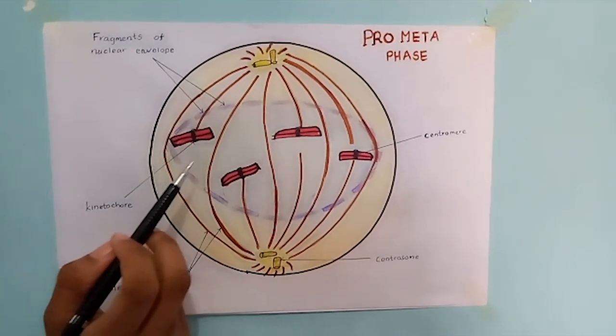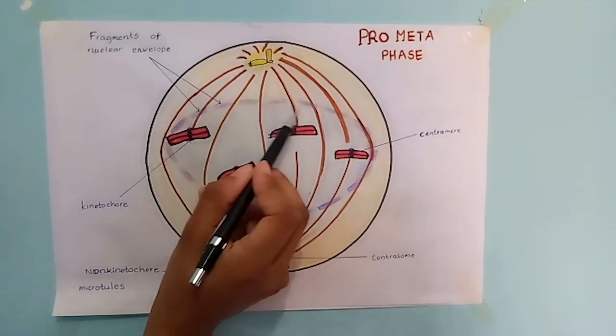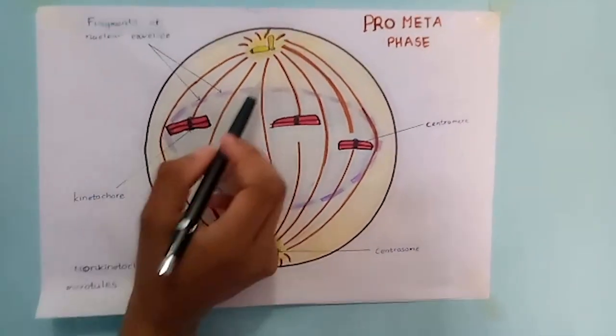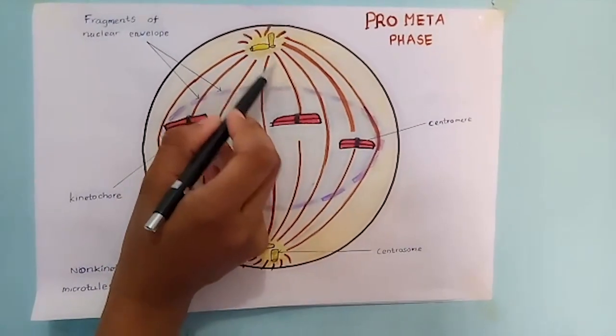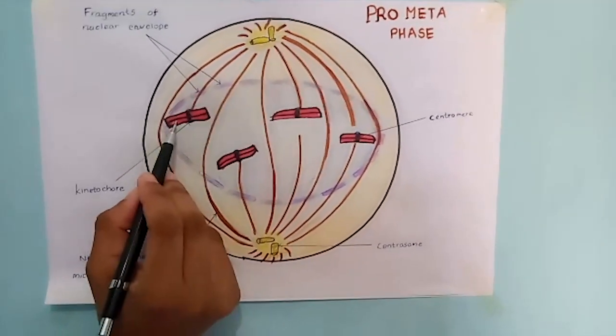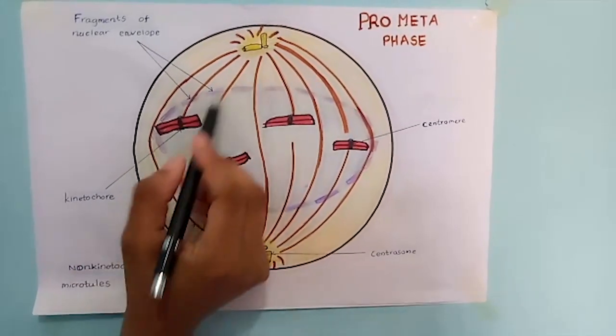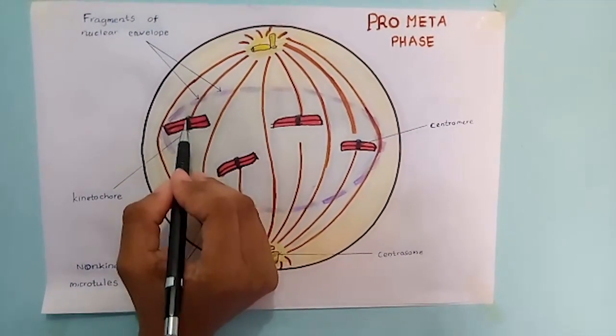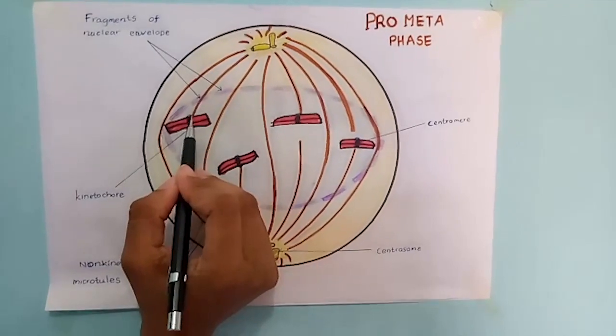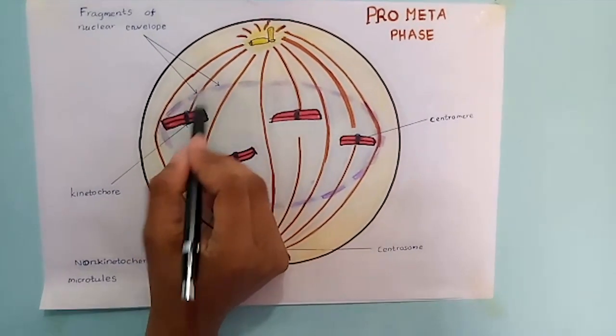After prophase, prometaphase occurs. In prometaphase, the nuclear envelope fragments. The microtubules extend from each centrosome. Chromosomes have become even more condensed. Some microtubules attach to the kinetochores. They are called kinetochore microtubules.